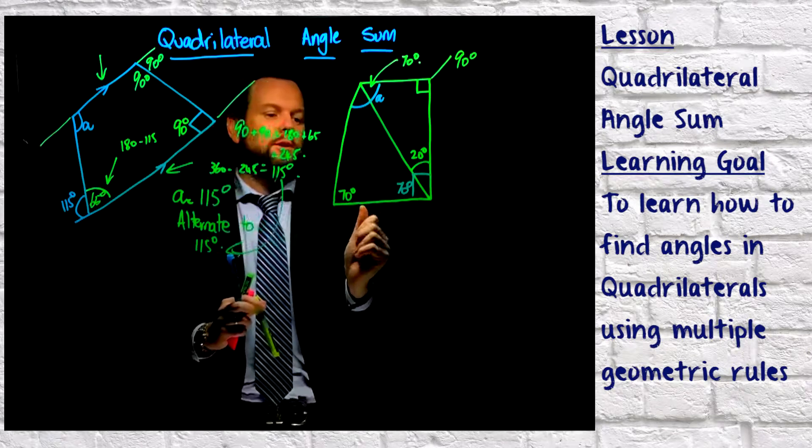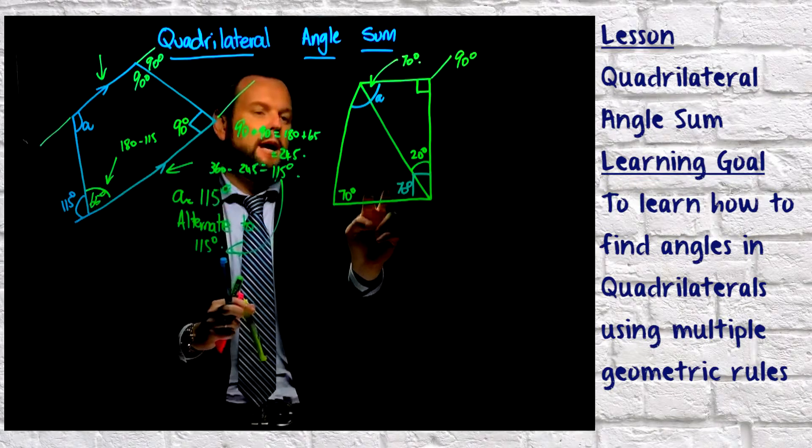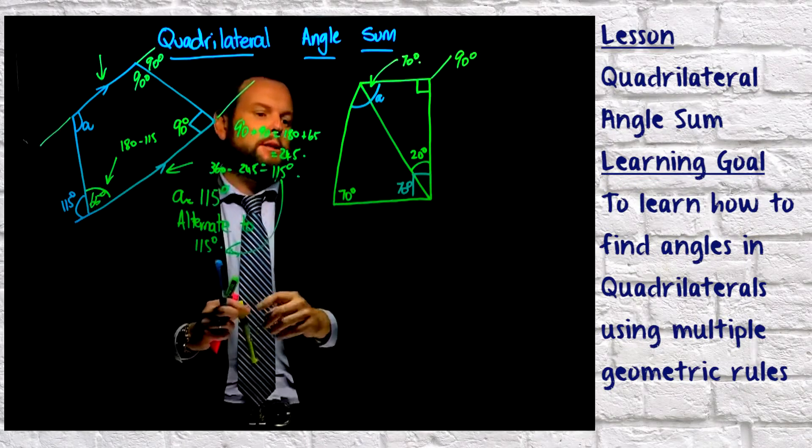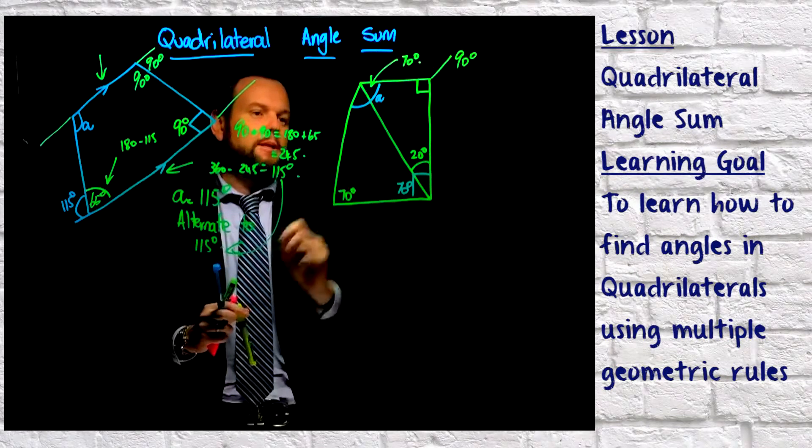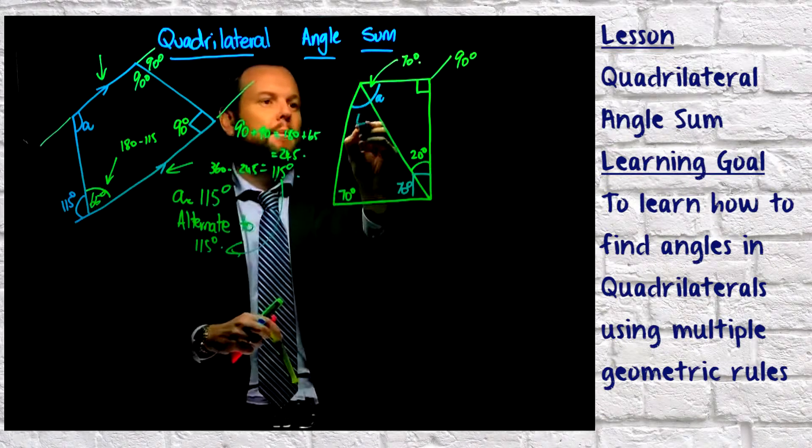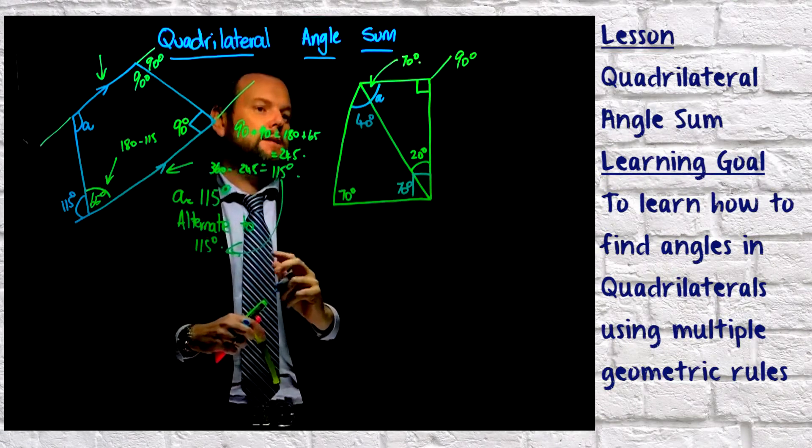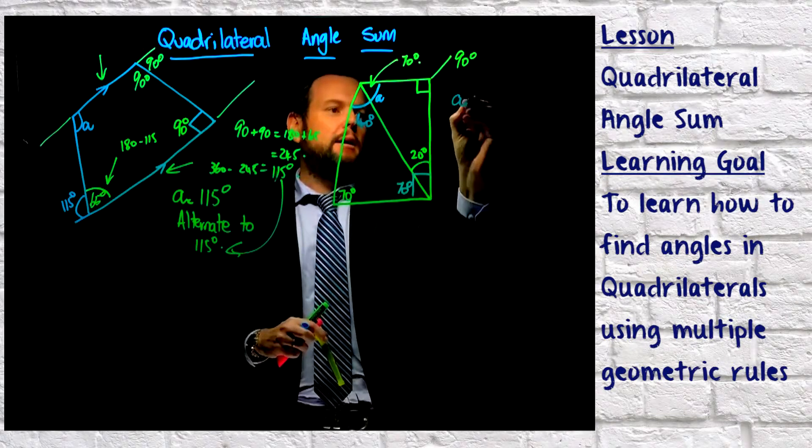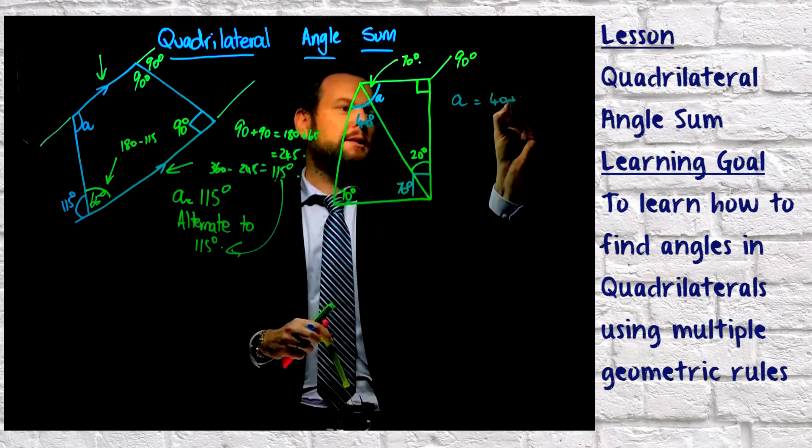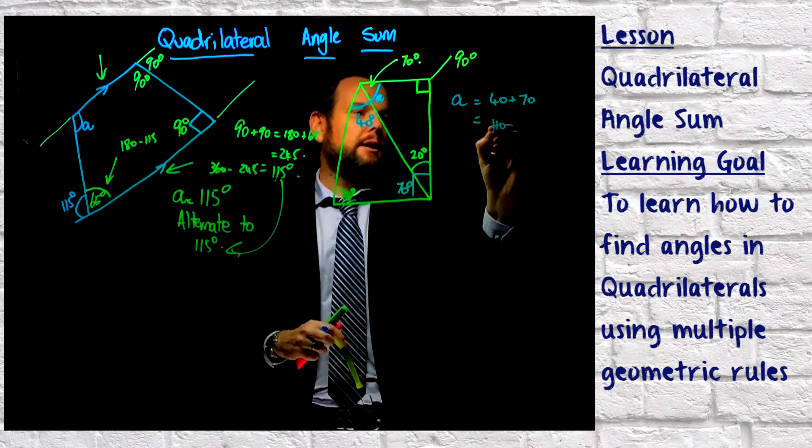Because it is an isosceles triangle, it means that our two base angles are the same, and our one up the top is going to be different. So 70 plus 70 is 140. Take it away from 180. I'm left with 40 up here. So that means that I've got 40 and 70, 40 and 70. And A is going to equal 40 plus 70, which gives me 110 degrees.